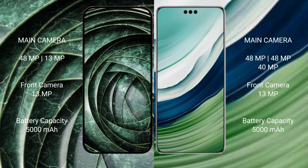Google Pixel 9a has a dual rear camera setup: 48MP plus 13MP, and a 13MP front camera. Huawei Mate 60 Pro Plus has a triple rear camera setup: 48MP plus 48MP plus 40MP, and a 13MP front camera. Google Pixel 9a has a 5000mAh battery with 18W fast charging support. Huawei Mate 60 Pro Plus has a 5000mAh battery with 88W fast charging support.